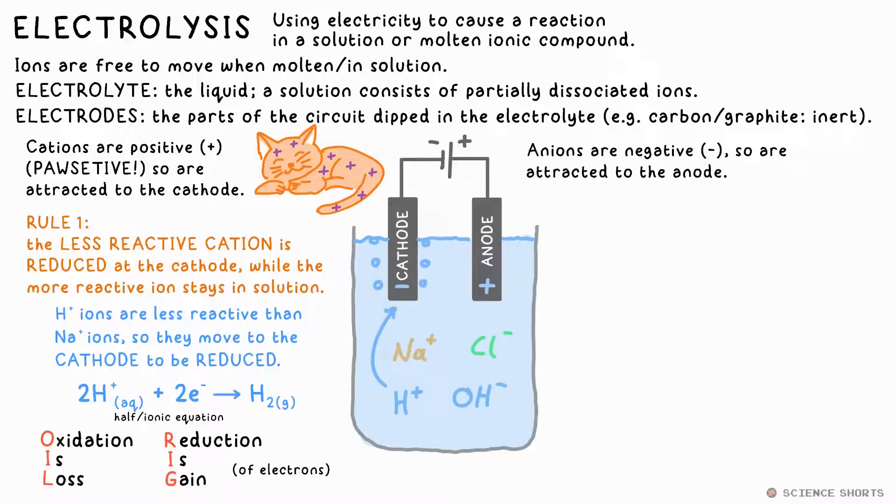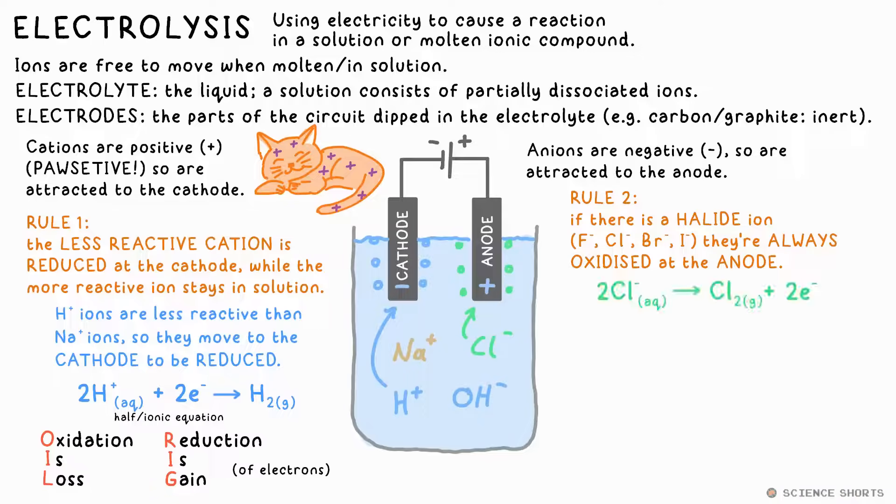The second rule to do with what happens at the anode is a bit trickier again. In short, if the anion in solution is a halide ion, that's fluoride, chloride, bromide or iodide, they're oxidized at the anode. They lose an electron each to turn into atoms. The half or ionic equation looks like this. Note that we put the electron on the other side. We should never really subtract an electron in an equation.